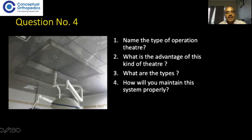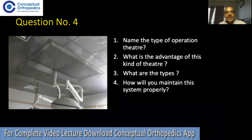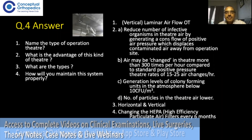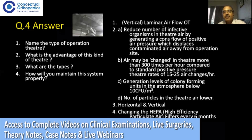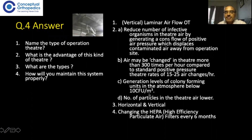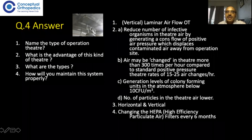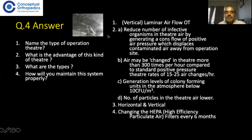The next question shows a theater with something on the ceiling. You are asked to name the type of operation theater, its advantages, its types, and how to maintain it properly. You write: this is a laminar airflow operation theater — more specifically, since the unit is ceiling-mounted, it is a vertical laminar airflow operation theater. There are two basic types: vertical laminar airflow and horizontal laminar airflow.